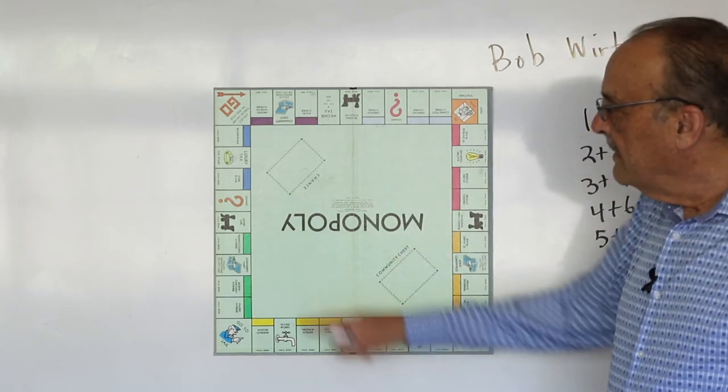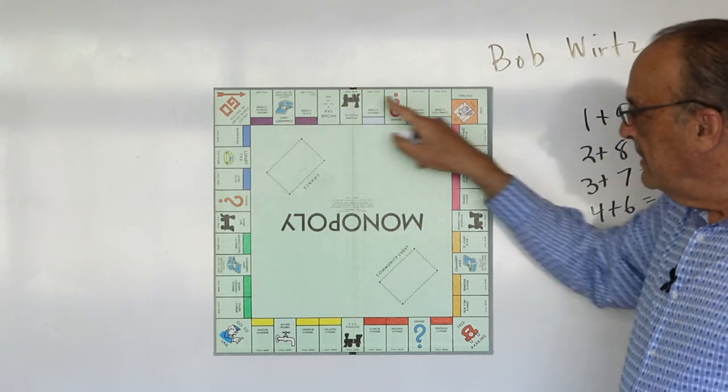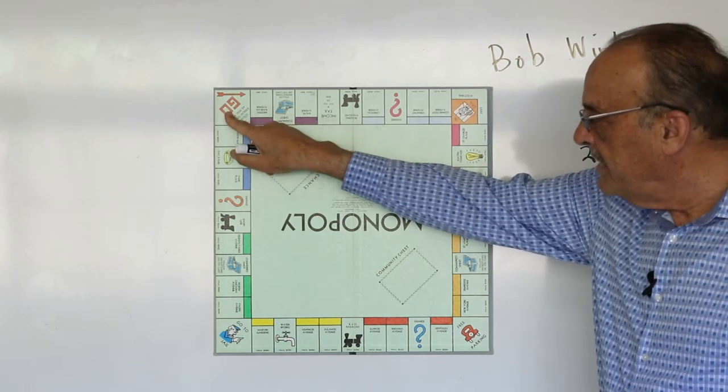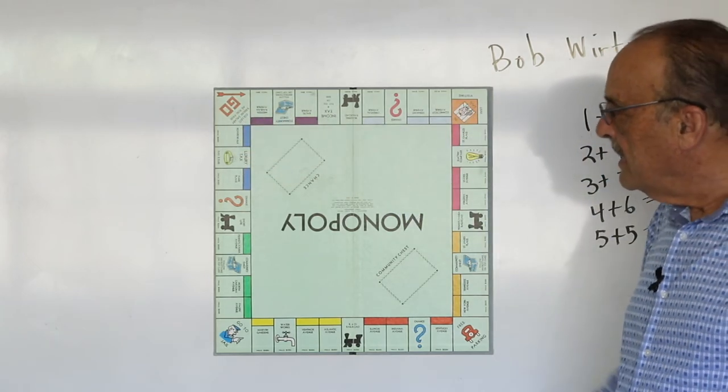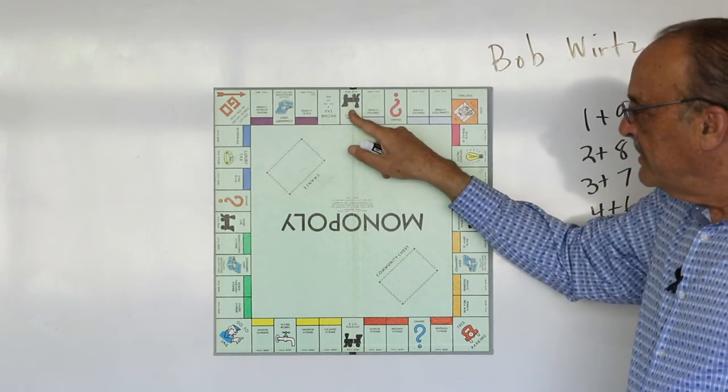So, for example, if you're here and you roll a 10, you just move to here. Because each row on the Monopoly board, a 10 would take you from corner to corner. And a 5 takes you from corner to railroad, and a 5 takes you from railroad to corner.